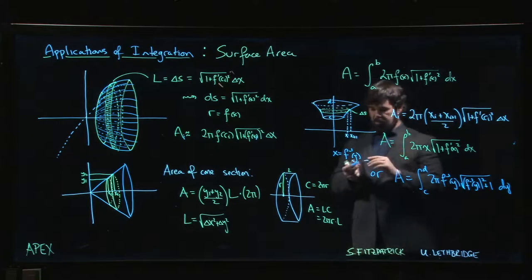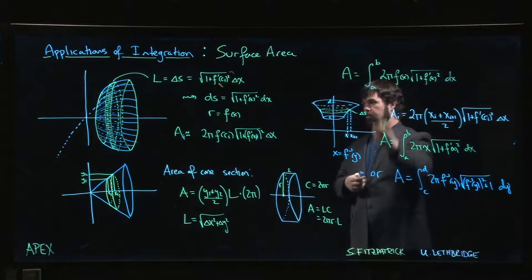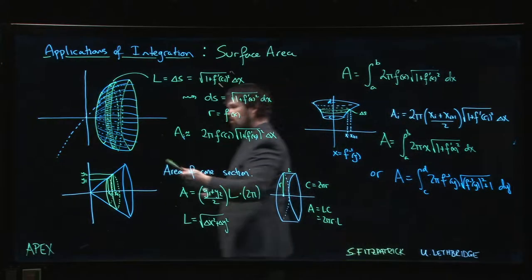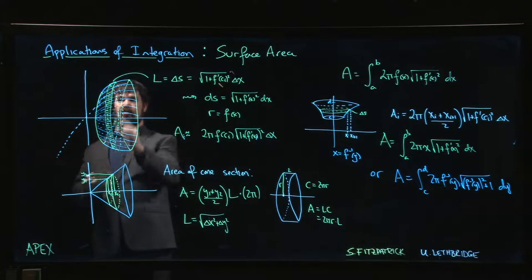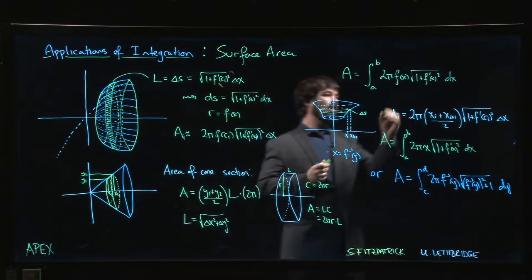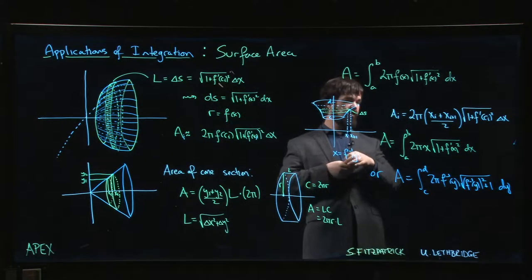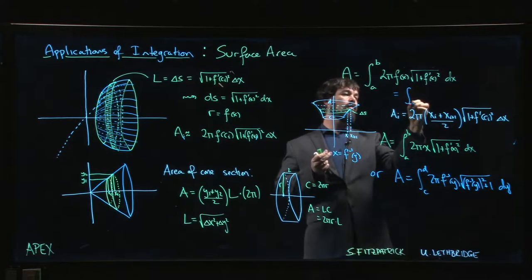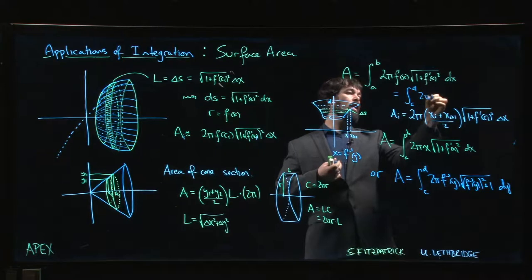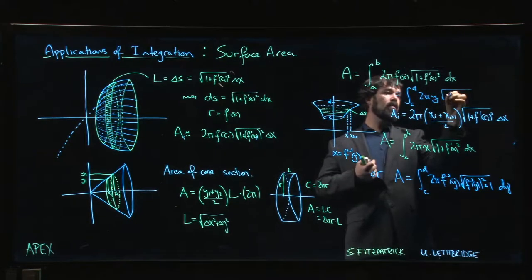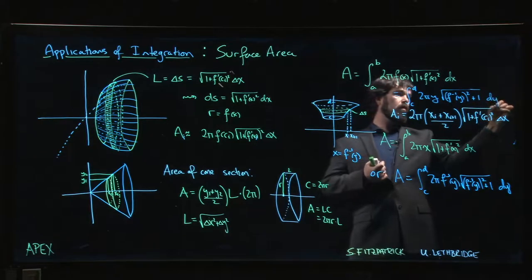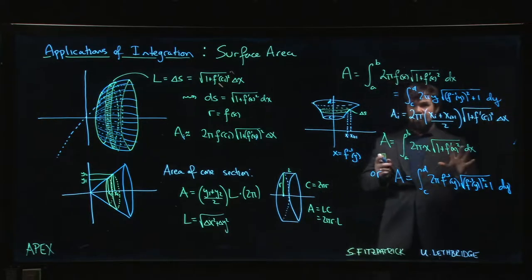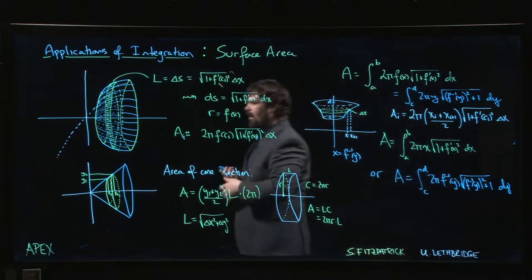And of course, the same thing could happen here. If you're revolving about the X axis like in this original picture, if we're using Y as the integration variable, well, now Y is the radius, we express the arc length in terms of the inverse. And so you might get something up here, like the integral from C to D of 2π Y times the square root of F inverse prime of Y squared plus 1 DY.